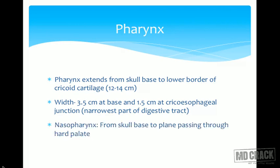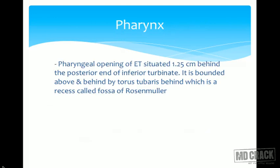The pharynx is divided into three parts: nasopharynx, oropharynx, and hypopharynx or laryngopharynx. The nasopharynx extends from the skull base to the plane passing through the hard palate. The pharyngeal opening of the Eustachian tube is situated 1.2 centimeters behind the posterior end of the inferior turbinate, bounded above and behind by torus tubarius, behind which is the fossa of Rosenmüller.